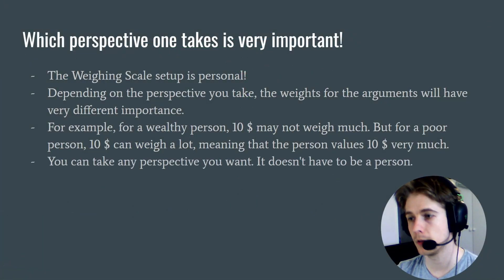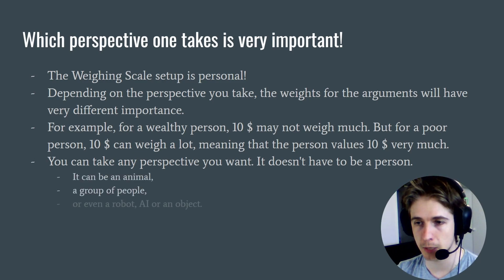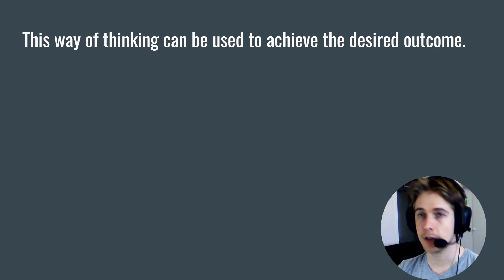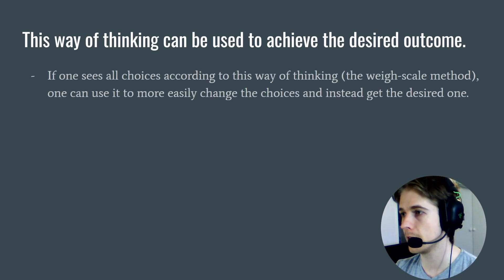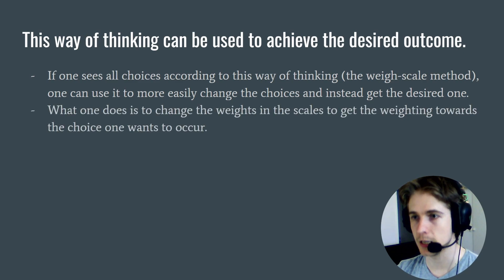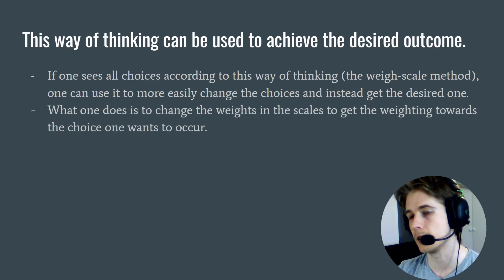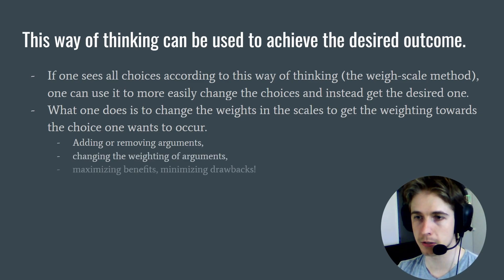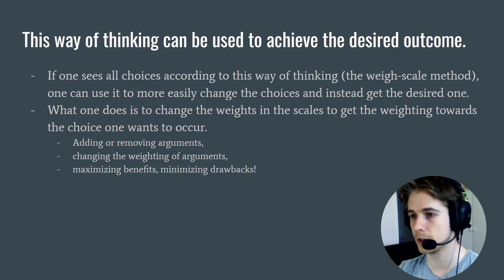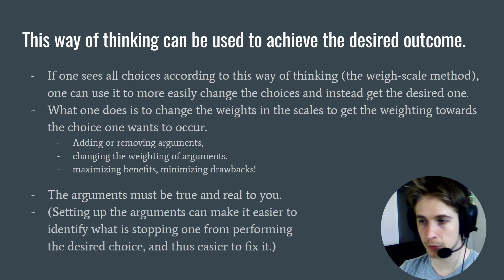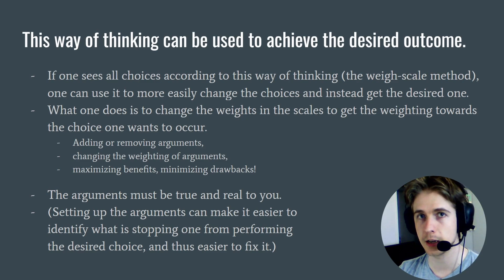You can take any perspective that you want — it doesn't even have to be a person. It can be an animal, a group of people, or even a robot, AI, or an object. This way of thinking can be used to achieve the desired outcome. If one sees all choices according to this way of thinking — the weighing scale method — one can more easily change the choices and instead get the desired one. What one does is change the weights in the scales to get the weighting towards the choice one wants to occur. We can do this by adding or removing arguments, changing the weighting of the arguments, or maximizing benefits and minimizing drawbacks. The arguments must be true and real to you though. Setting up the arguments can make it easier to identify what's stopping one from performing the desired choice, and thus easier to fix it.